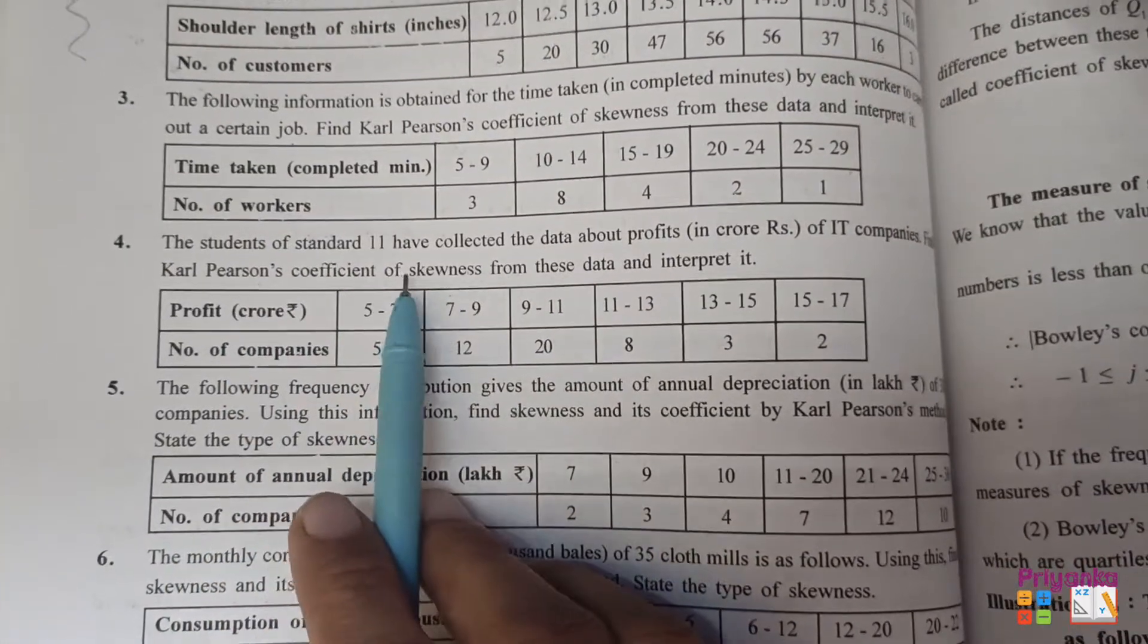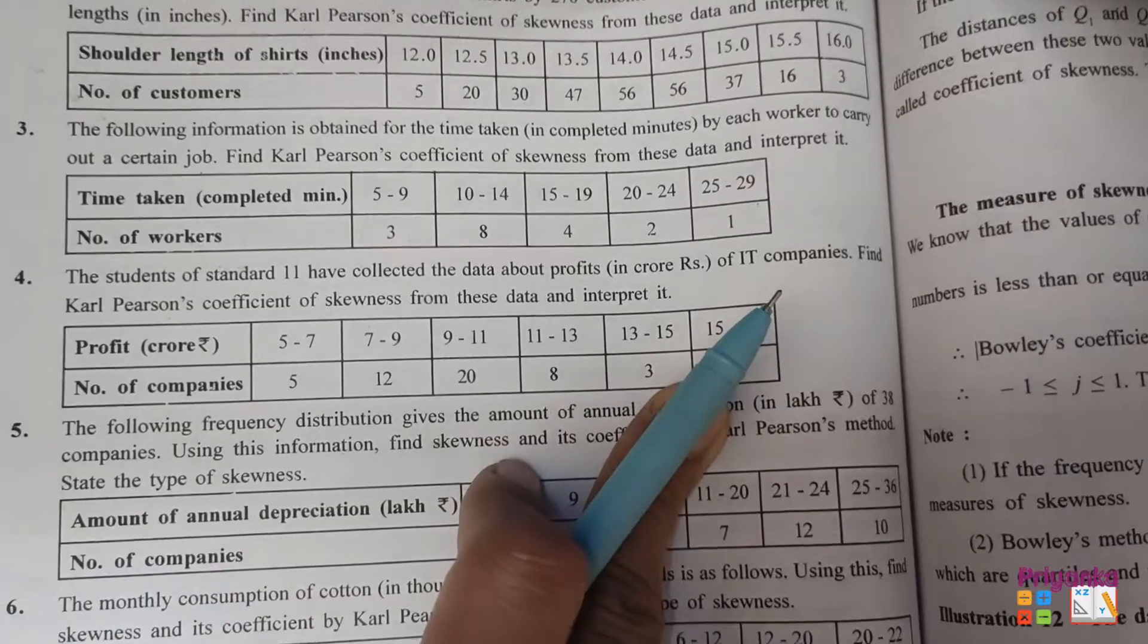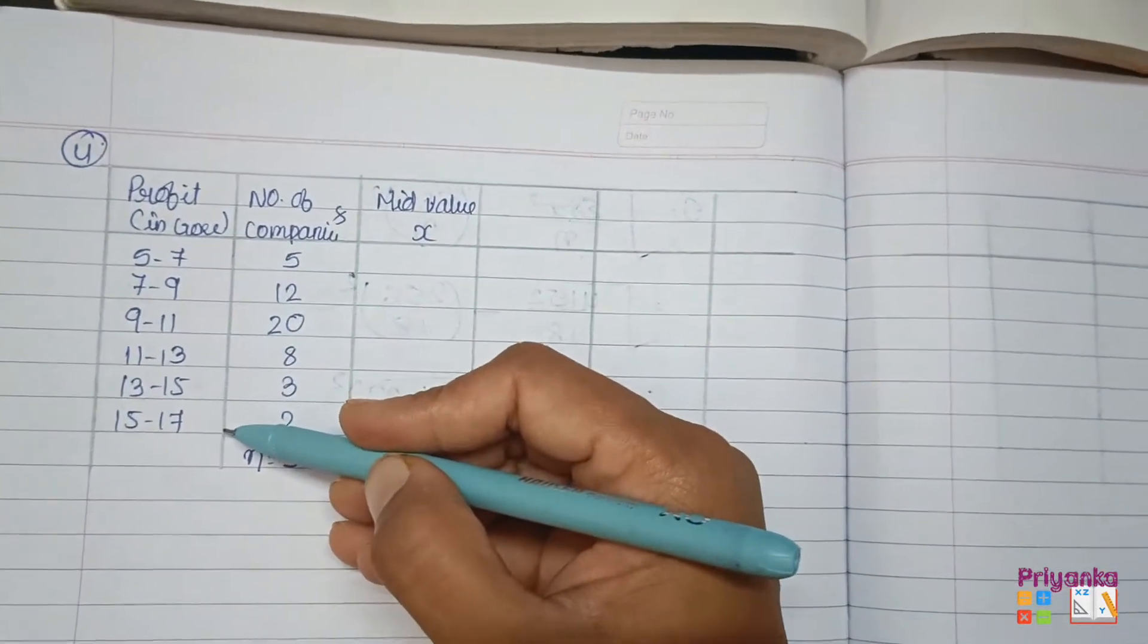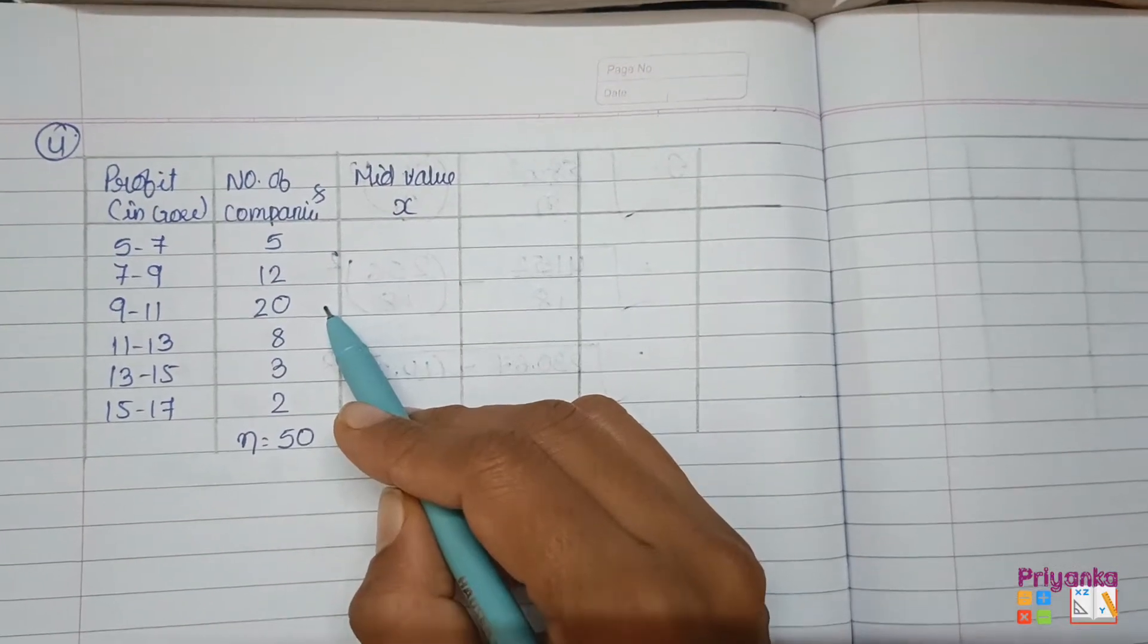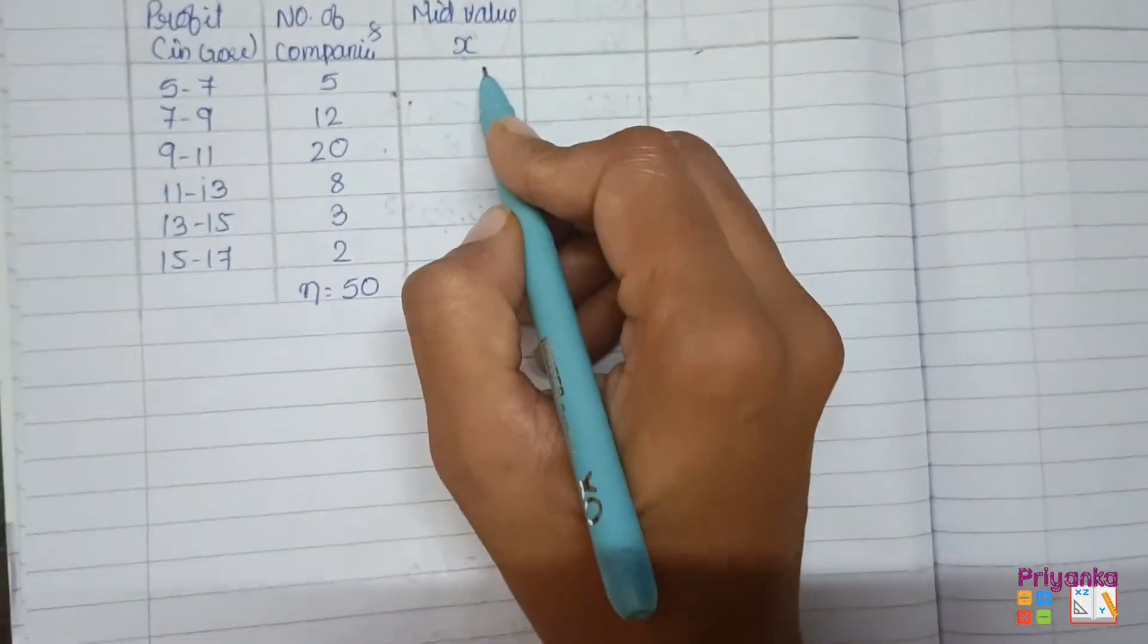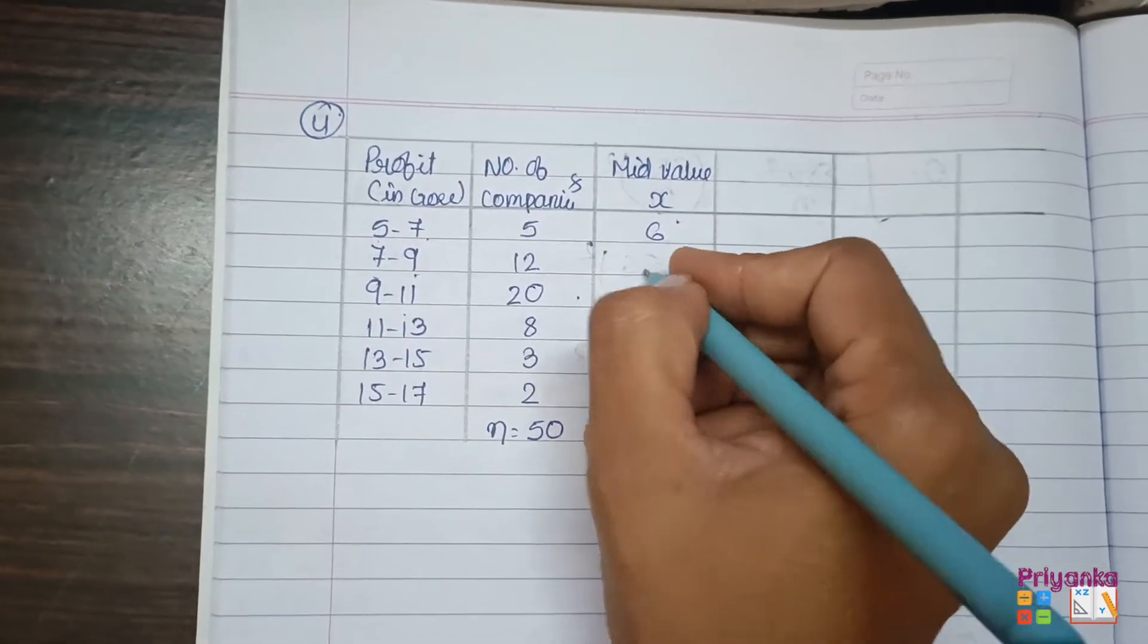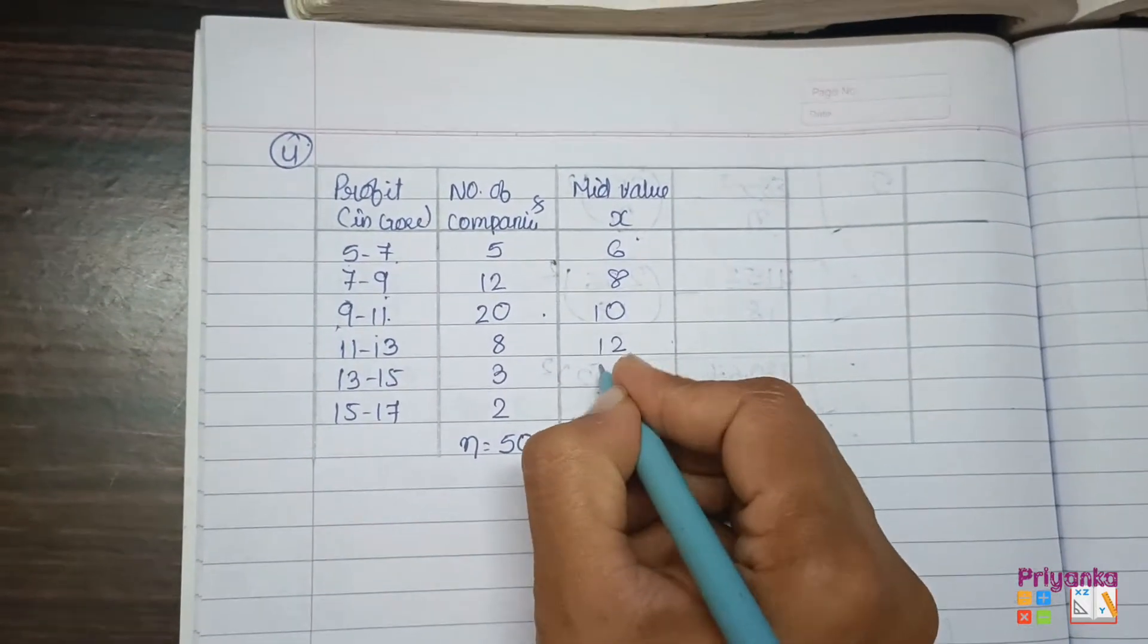Question 4: Students of standard 11 have collected data about profit in crores of rupees in IT companies. Find Carl Pearson's coefficient of skewness and interpret. The observation is normal with continuous frequency distribution. First, we'll find the mid value - that's 5 plus 7 divided by 2 equals 6, 7 plus 9 divided by 2 equals 8, 9 plus 11 divided by 2 equals 10, and so on with the same calculation.